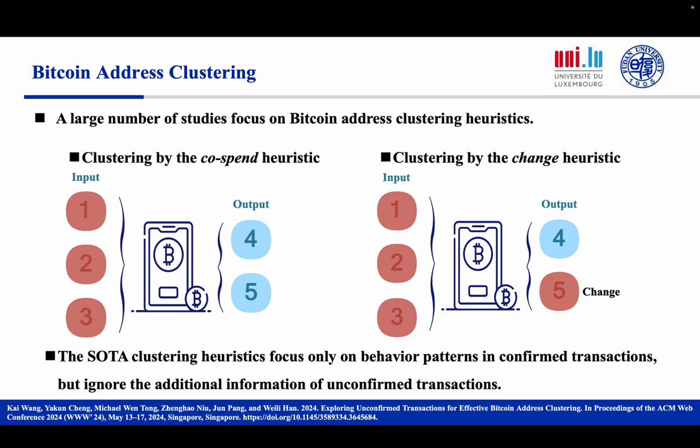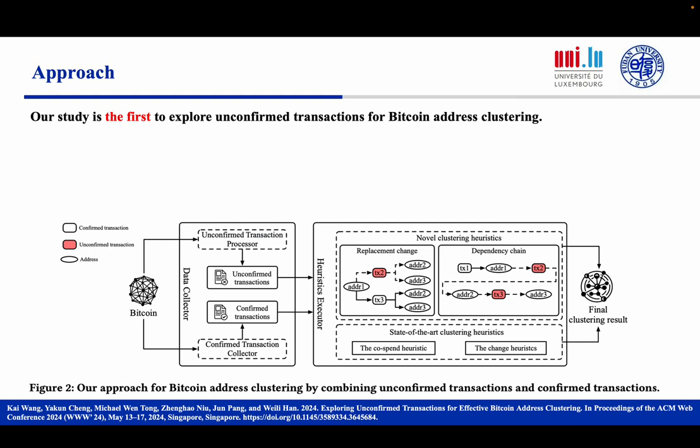So far, the state-of-the-art clustering heuristics focus only on behavior patterns in confirmed transactions, but ignore the additional information of unconfirmed transactions in the memory pool, resulting in many address associations being missed. In this paper, we break this gap by combining confirmed and unconfirmed transactions for effective Bitcoin address clustering.